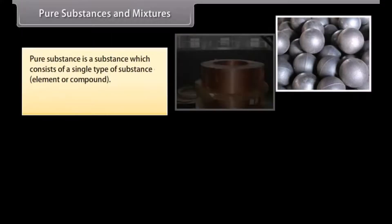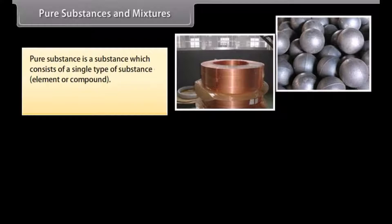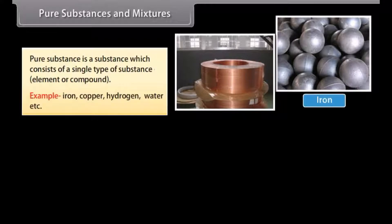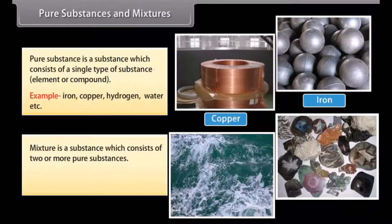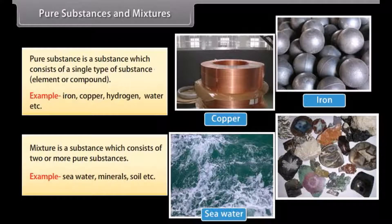Pure substances and mixtures. A pure substance is a substance which consists of a single type of substance — element or compound. Examples include iron, copper, hydrogen, water, etc. A mixture is a substance which consists of two or more pure substances. Examples include sea water, minerals, soil, etc.